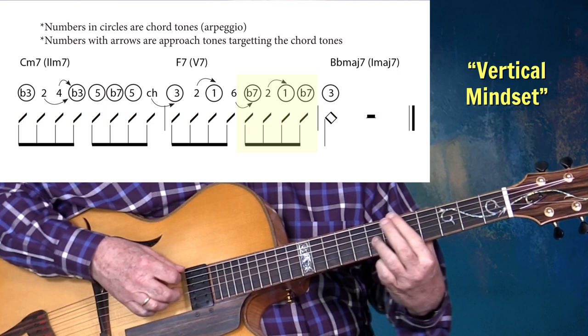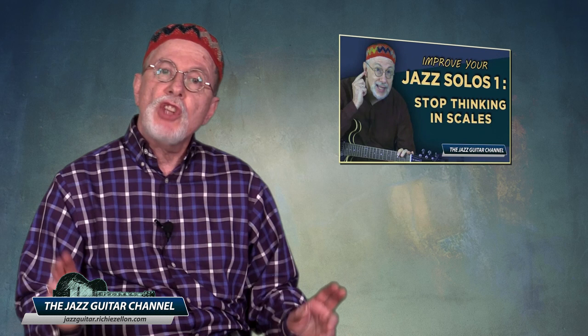This approach is good for modal progressions where you're playing a single scale over several related diatonic chords. But when we play bebop, we're playing over a bunch of different changes and we want to imply the changes in our lines, so we think vertically — thinking of the arpeggio and targeting the important chord tones. Listen to this line — you can clearly hear a 2-5-1. I did a lesson called 'Stop Thinking in Scales,' part of a 10-part series called 'Improve Your Jazz Solos' — link in the info section below.